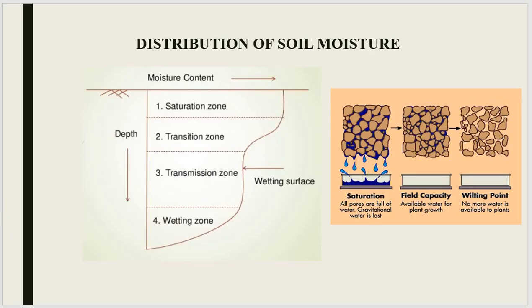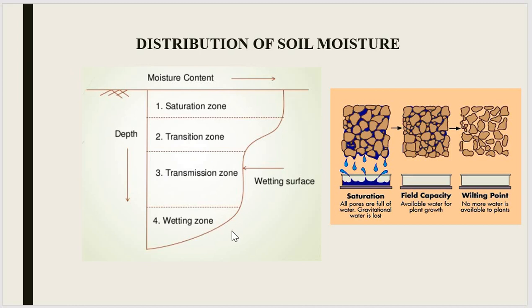Coming to the distribution of soil moisture, the moist soil layers immediately below the ground level are divided into four zones. The first is the saturation zone — this is the immediate layer after the ground level, and it is a very thin layer that will always be saturated. The second layer is the transition zone, which is a change from the saturation level to the transmission level. The third zone is the transmission zone, where the moisture content is above field capacity.